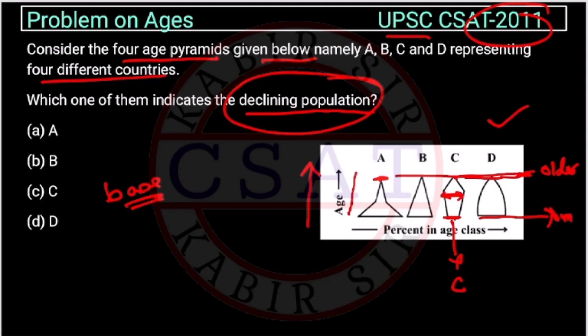If you see this figure, this area, this is more, these are the younger population, and this is the middle age population. So, the declining population will be when the younger population is less than the middle population.